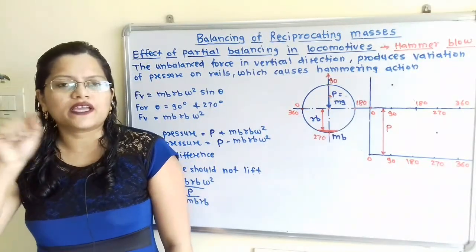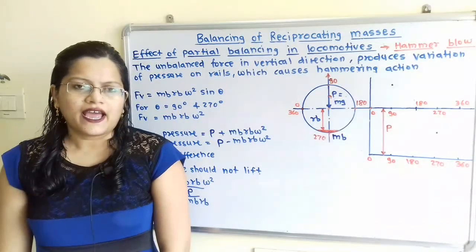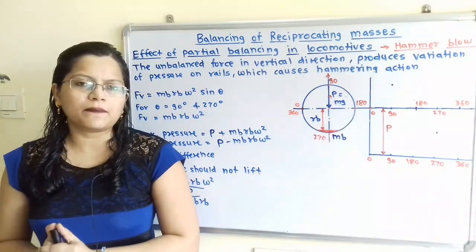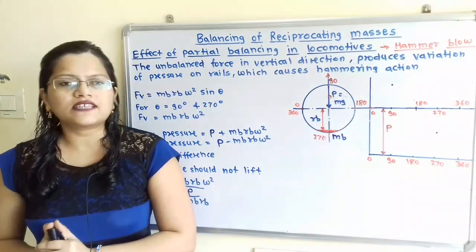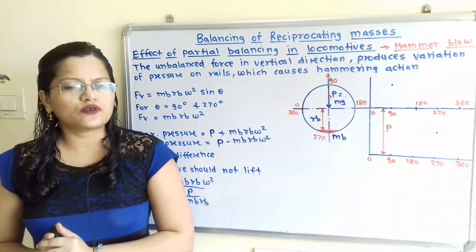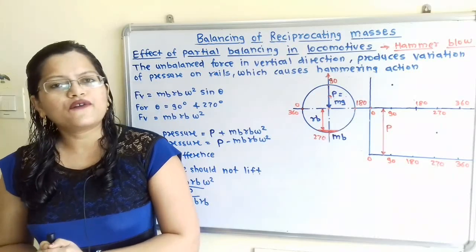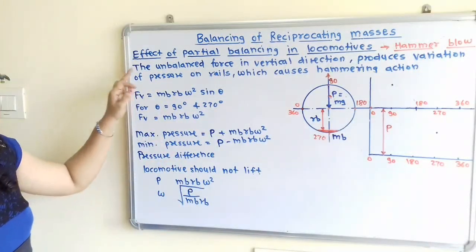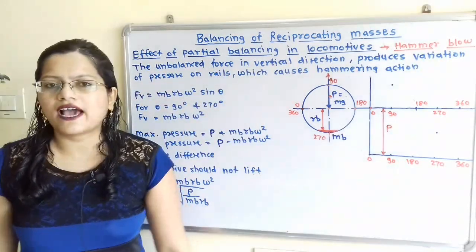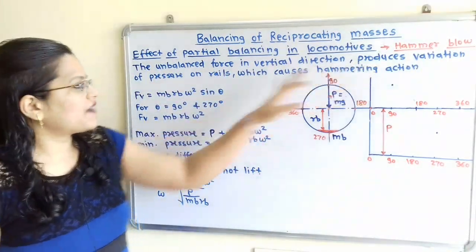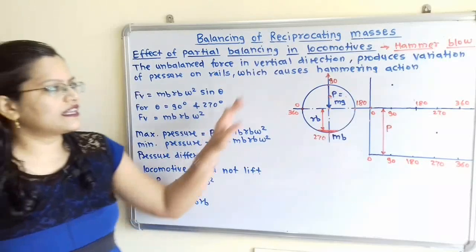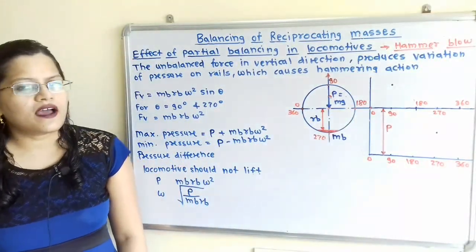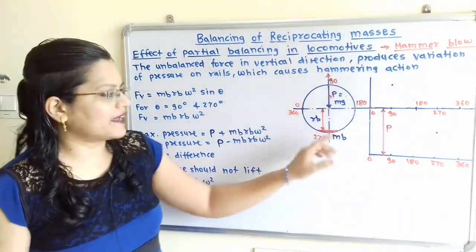These wheels are moving on the rails, and there is pressure variation taking place while the wheels move on rails due to this vertical component. So how can we define the hammer blow effect? The unbalanced force in the vertical direction produces variation of pressure on rails, which causes the hammering action. We will understand this term with the help of a diagram.